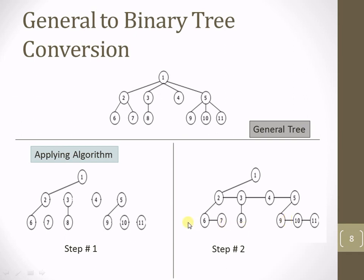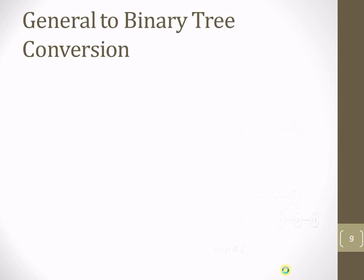Step 2 says we need to reconnect all the siblings with each other starting from the leftmost node. So node 2 is connected with 3, 3 with 4, and 4 with 5 — because all these are siblings. Node 6 is connected with 7 because 6 and 7 are siblings. Node 7 is not connected with 8 because they are not siblings. Nodes 9, 10, and 11 are siblings, so 9 is connected with 10 and 10 with 11. This is how the binary tree is generated from the general tree.